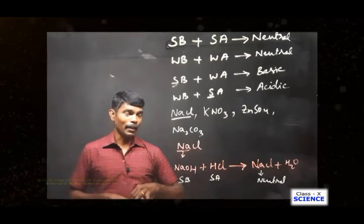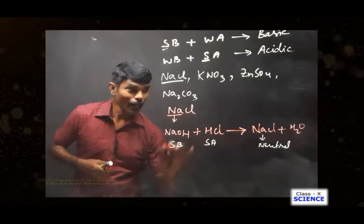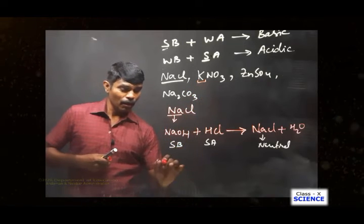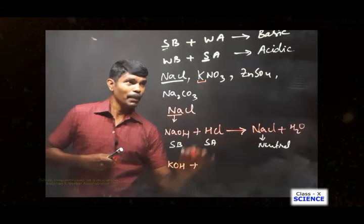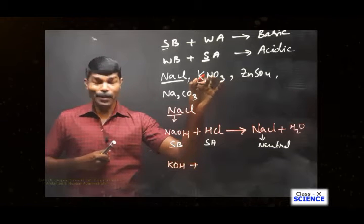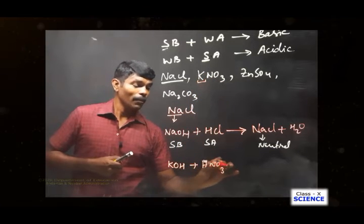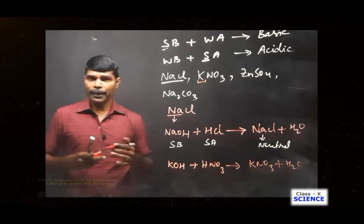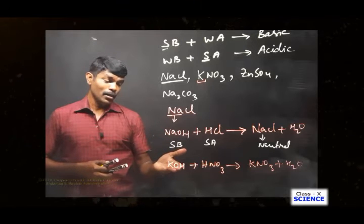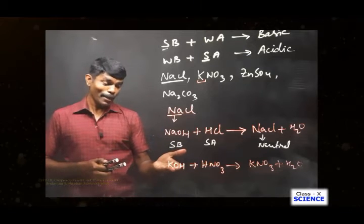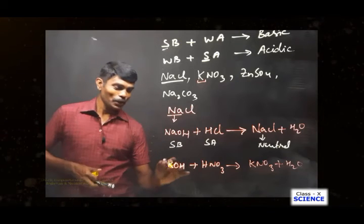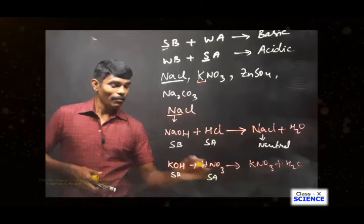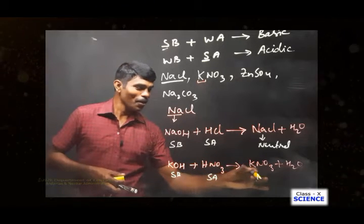Now potassium nitrate KNO₃: potassium comes from the base KOH (potassium hydroxide), and nitrate comes from nitric acid HNO₃. So KOH + HNO₃ → KNO₃ + H₂O. KOH is a strong base and nitric acid is a strong acid. Strong base + strong acid gives a neutral salt. So potassium nitrate is also neutral.